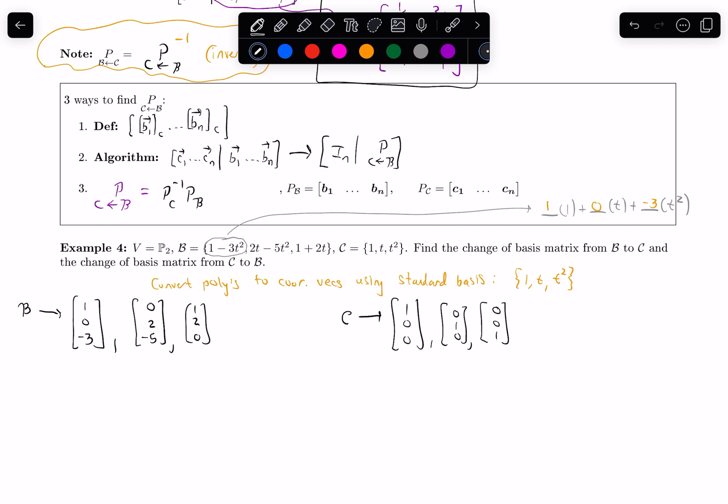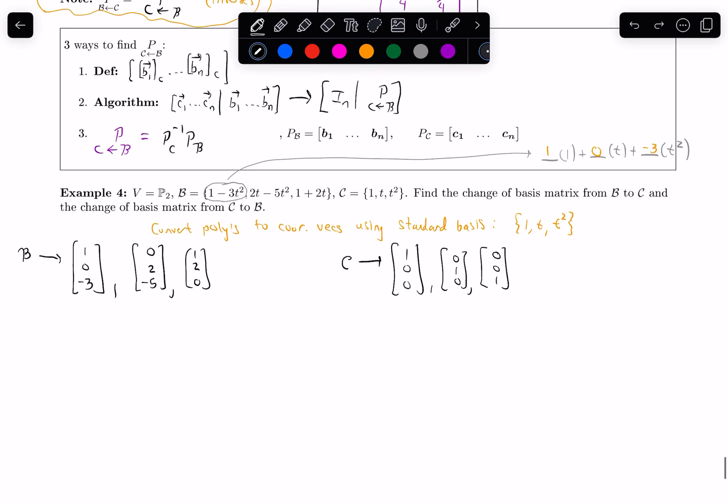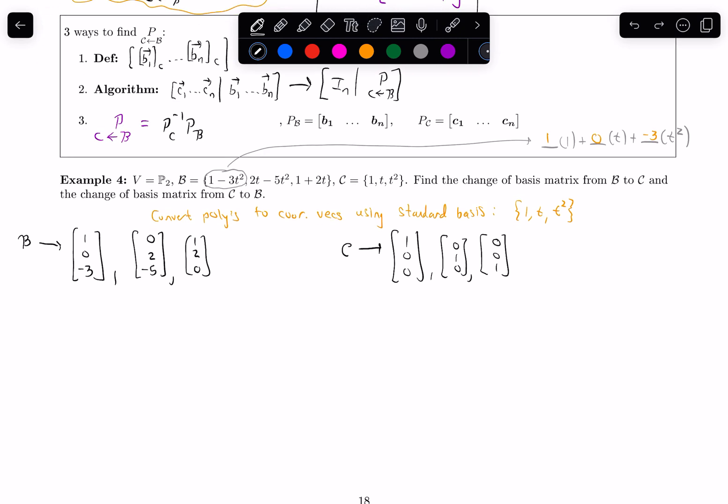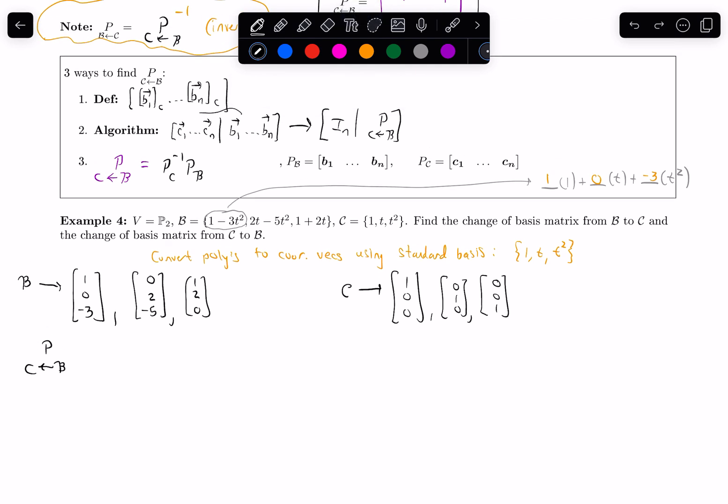All right, so now that I have column vectors, I can more easily use one of these three methods to get these change of basis matrices. So first, maybe I'll do the change of basis matrix from B to C. Remember, this is my notation for it. The one that I'm starting with, I write on the right, and then I put an arrow to the one I'm converting to, and then I put that one on the left. So let's practice using this row reduction algorithm that we saw in the last video.